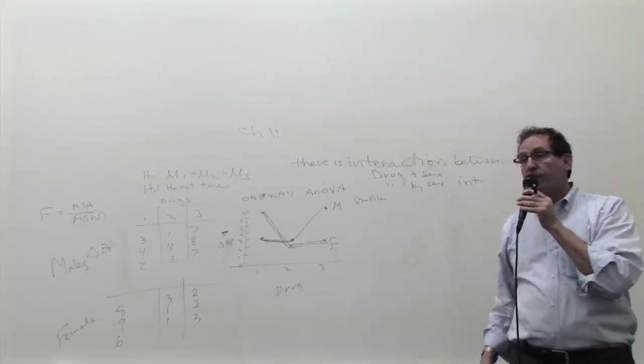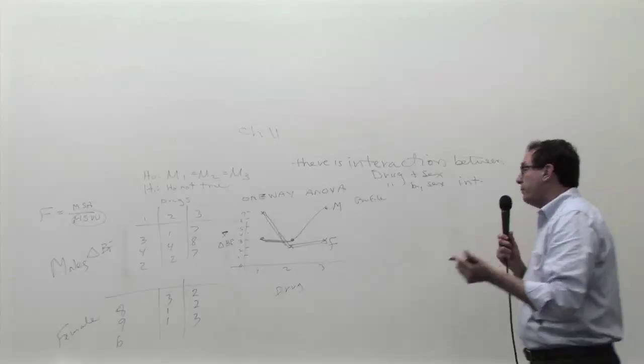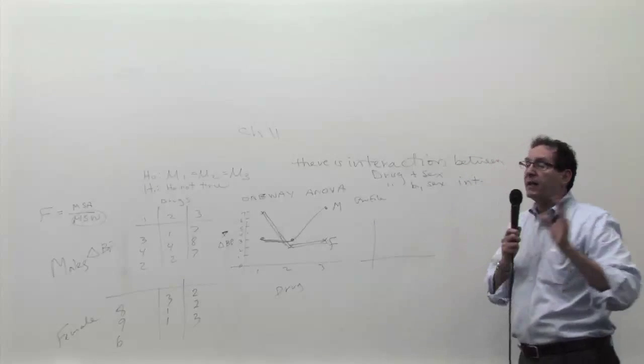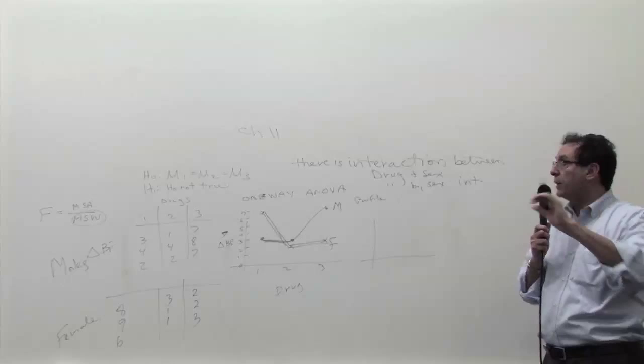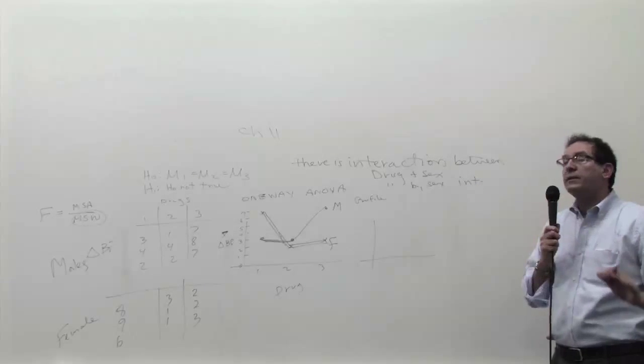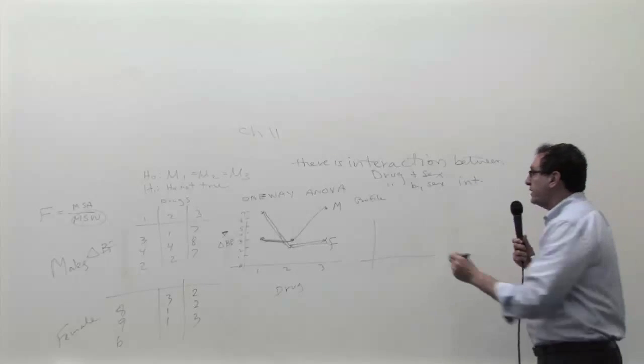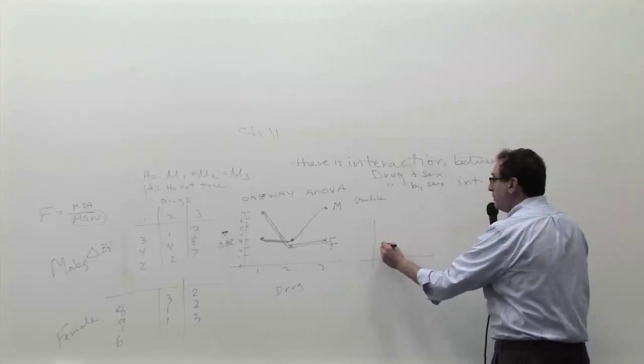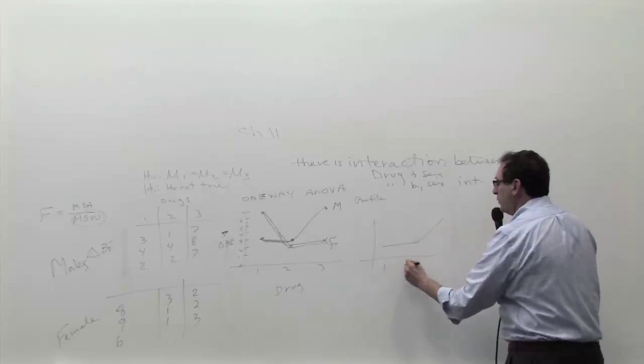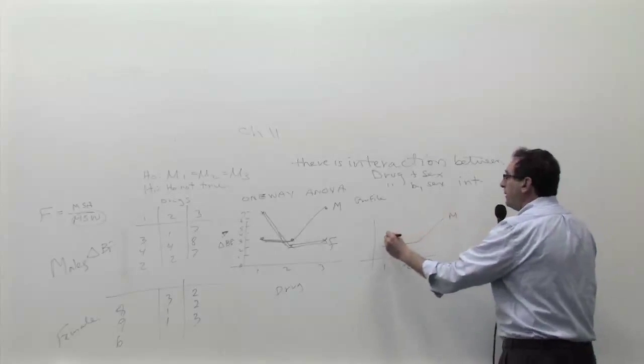Very good. When they're parallel, when the two lines are roughly... statistics not like geometry. If they're roughly parallel, we say the two lines, there's no interaction. For example, if this would have been the picture for the males, which it is, one, two, and three, and this would have been the picture for the females.